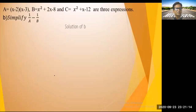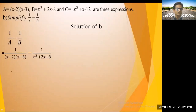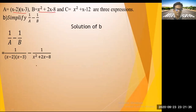Solution of (b): Simplify 1/A - 1/B. Write 1/A = 1 / [(x - 2)(x - 3)] and 1/B = 1 / (x² + 2x - 8). We need to find the factor of x² + 2x - 8 first.